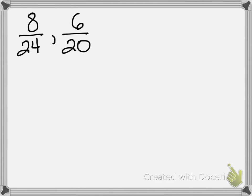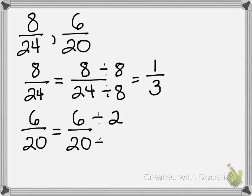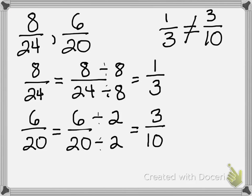Let's look at eight-twenty-fourths and six-twentieths. I'll simplify eight-twenty-fourths first. I can divide both by eight, giving me one-third. Now for six-twentieths, I divide top and bottom by two — that's my greatest common factor — and I simplify to three-tenths. One-third is not equal to three-tenths, so I'll draw an equal sign with a line through it to show they are not equal. These are not proportional.